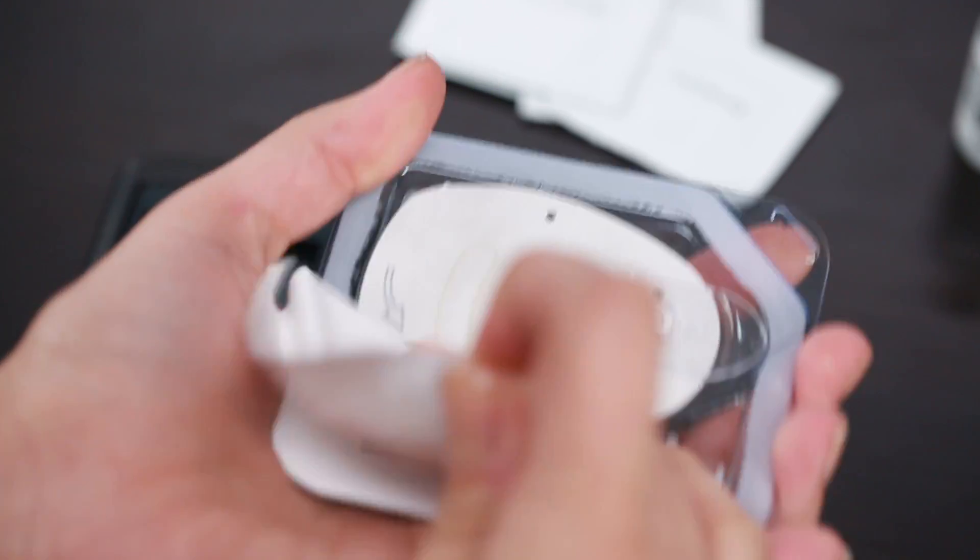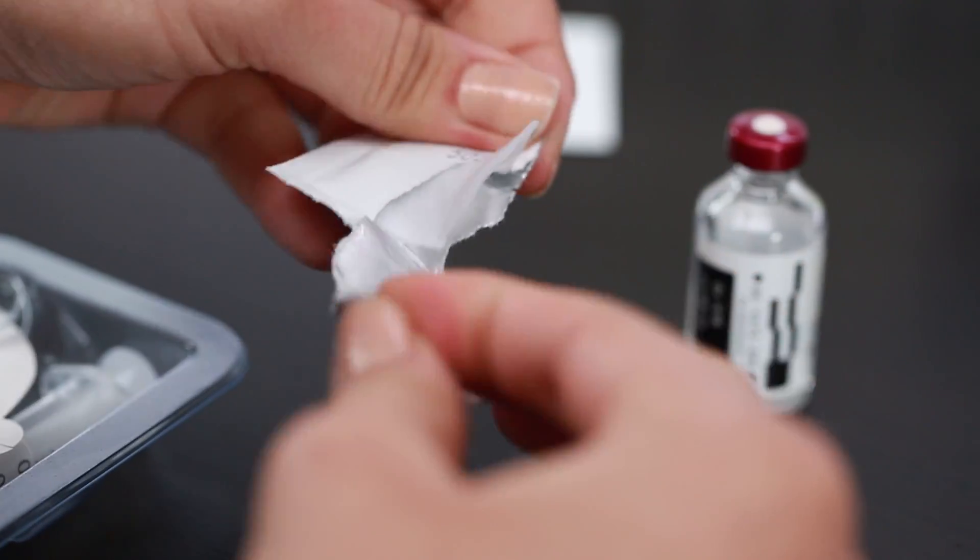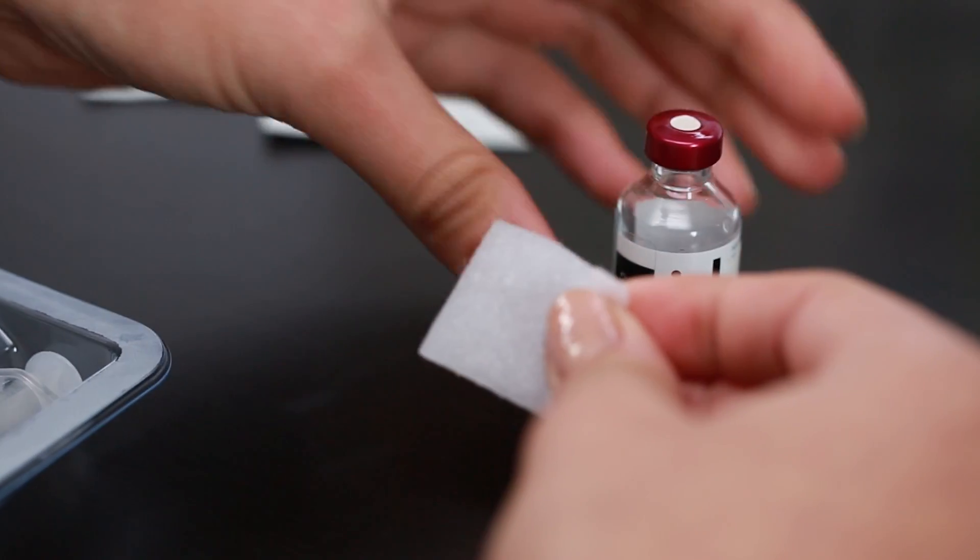To fill a new pod, first remove the backing from the pod's cartridge. Use an alcohol swab to clean the top of the insulin vial.